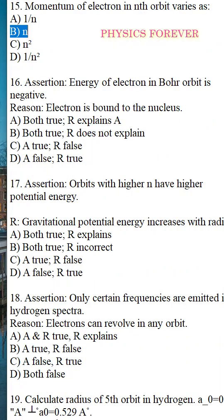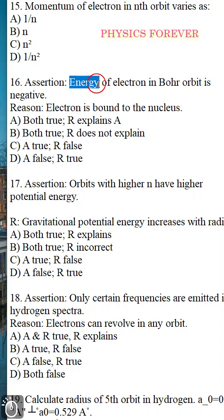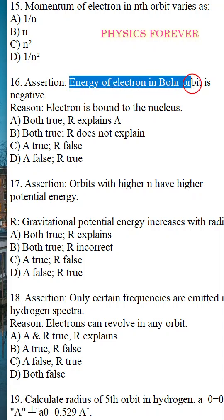Question number 16 is an assertion and reason type question. Most of these question types may have been asked in the previous PGTRB exam. The assertion is that the energy of an electron in a Bohr orbit is negative.